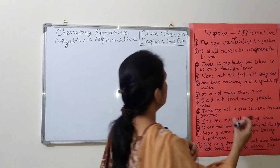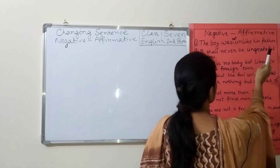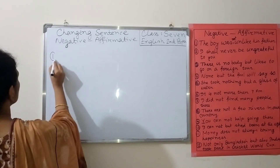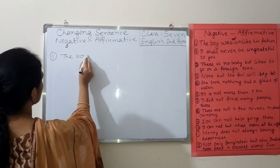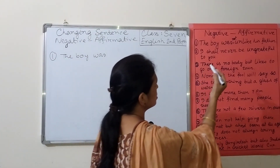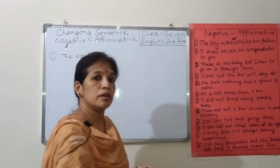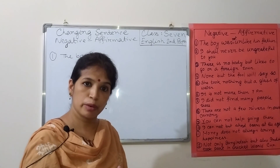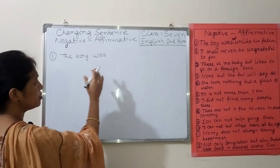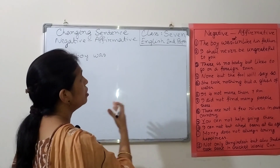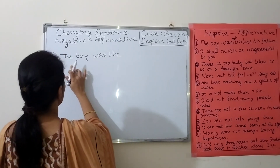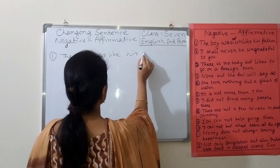The first sentence is: 'The boy was not unlike his father.' Here we can see two negative signs — 'not' and 'unlike.' That's why we have to use an affirmative word to change the sentence. We will remove 'not' and instead of 'unlike' we use 'like.' The affirmative sentence is: 'The boy was like his father.'